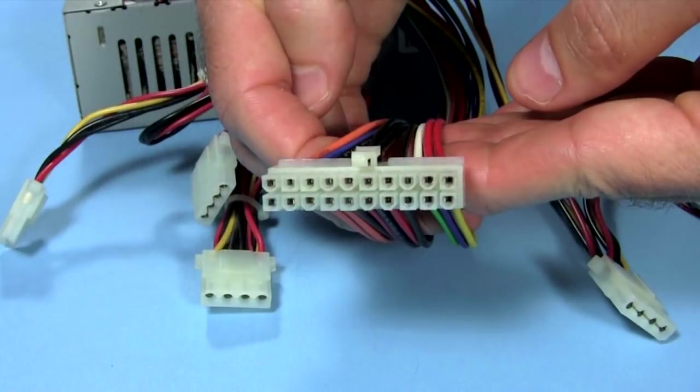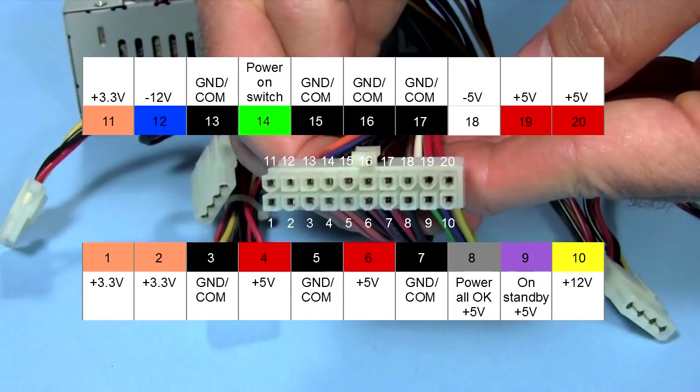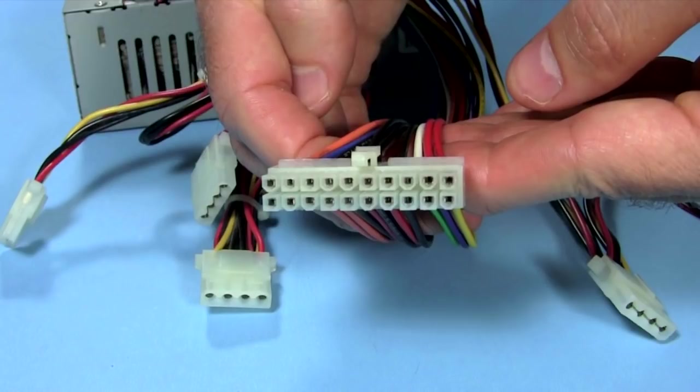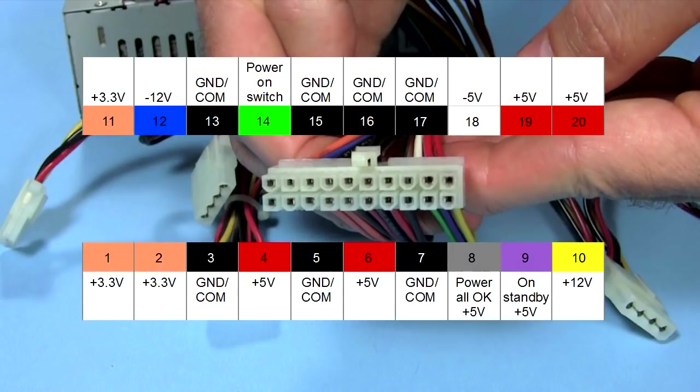When looked at from this orientation, with the latch on top, the pins are numbered this way. And this chart tells you what each pin is for. Note that the wires are also color-coded, and all the voltages are for DC.